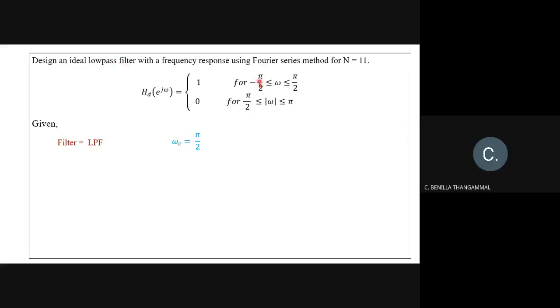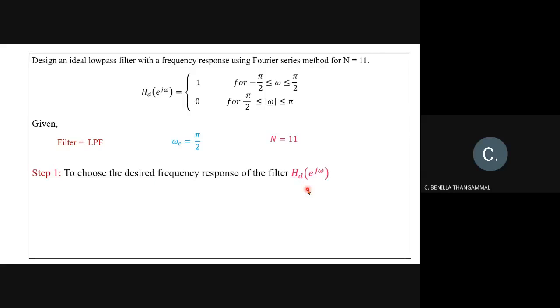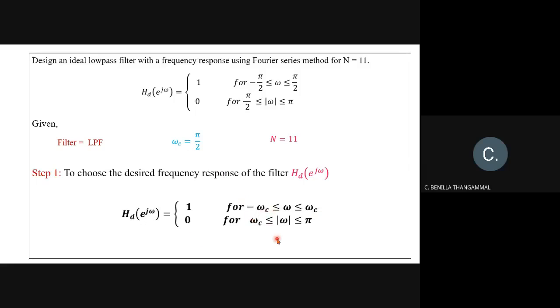This is a low pass filter with cutoff frequency ωc = π/2. Step one: choose the desired frequency response. Instead of substituting ωc = π/2 directly, keep the value as ωc so that we substitute at the end. So Hd(e^(jω)) = 1 for −ωc to ωc, and zero for remaining values.